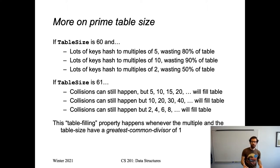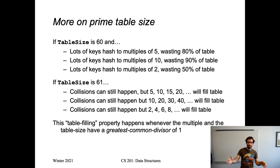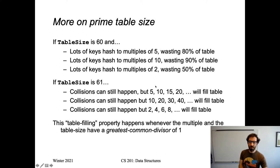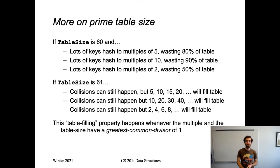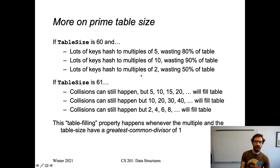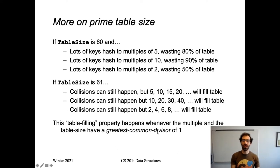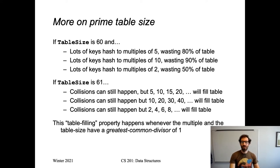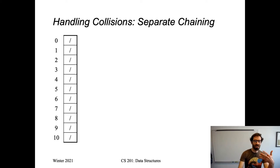This table-filling property is what we want — we'd like the keys we're hashing to end up in different indexes and fill up the whole table. This happens when the multiple and the table size have a greatest common divisor of one. Since 61 is prime, its greatest common factor with anything that's not a multiple of 61 is going to be one, giving us this table-filling property. But a prime table size is not foolproof — we can have collisions even with a prime table size.